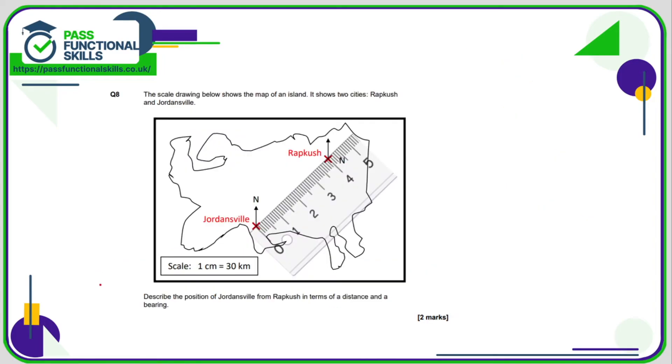Question number 8, we need to describe the position of Jordansville from Rappcush in terms of distance and bearing. So the distance is, well in terms of centimeters, it's 4 centimeters. And the scale is 1 centimeter equals 30 kilometers. So if 1 centimeter equals 30 kilometers, then 4 centimeters equals 4 lots of 30 kilometers, and that comes to a total of 120 kilometers. So Jordansville is 120 kilometers from Rappcush. And what is the bearing?